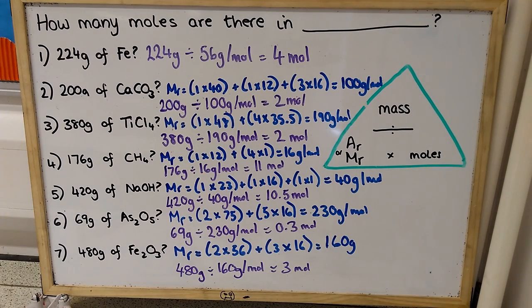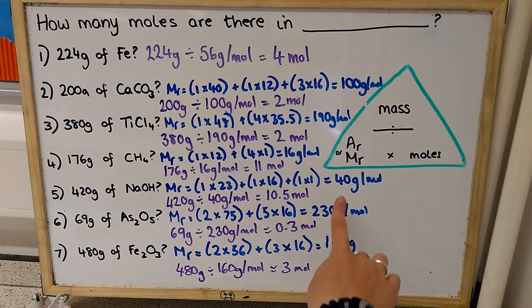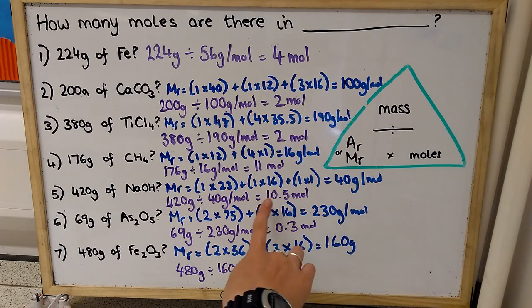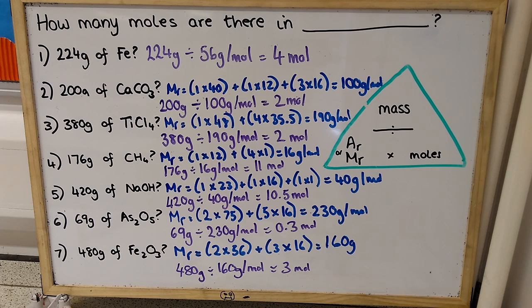You've worked out that the relative formula mass of sodium hydroxide is 40 grams per mole. And so there, we're going to have 10.5 moles. We said that's absolutely fine, you can always have a fraction of a mole, that's completely fine and normal.